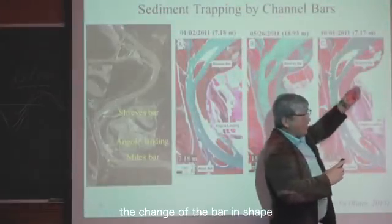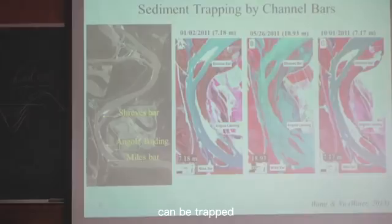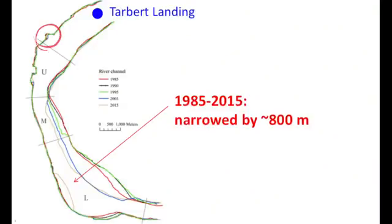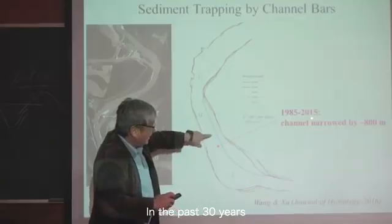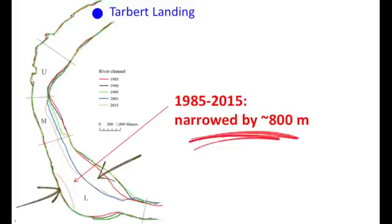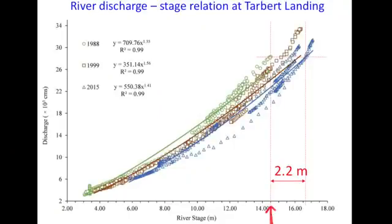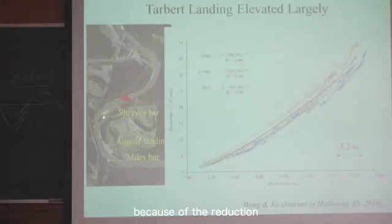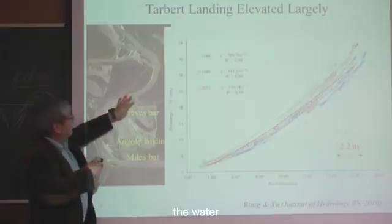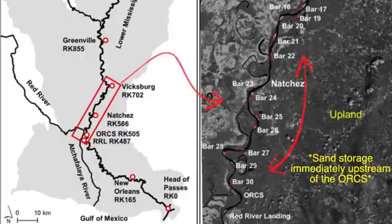We analyzed the change of the bar in shape and volume to figure out how much sediment can be trapped by bars during a flood. In the past 30 years, from 1985 to 2015, the channel has narrowed dramatically by 800 meters. And for the same volume of flow, the river stage has increased by 2.2 meters — or 7 feet — meaning flood water would be backed up.